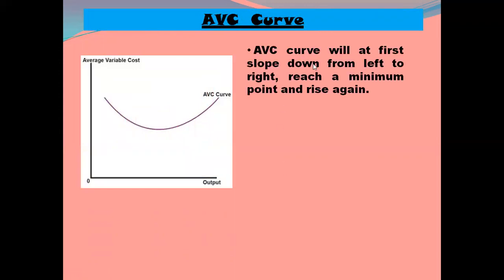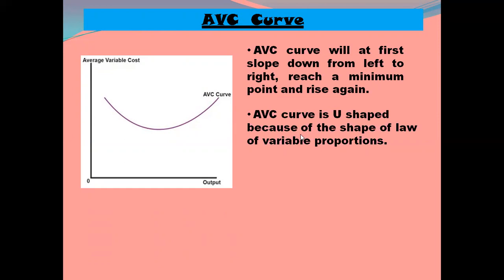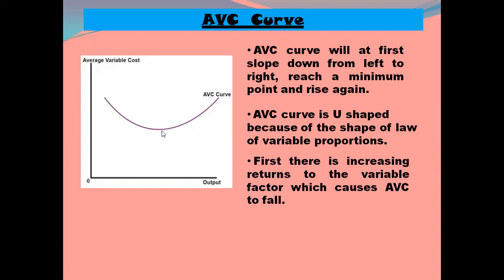The AVC curve will at first slope down from left to right, reach a minimum, and then rise again. AVC curve is U-shaped because of the law of variable proportions. As the quantity of variable input increases, fixed input is better utilized, resulting in an increase in efficiency of the variable factor. So AVC is decreasing at small levels of output. Then there is constant returns to the factor, so AVC remains constant or reaches its minimum.